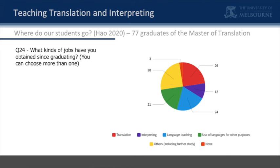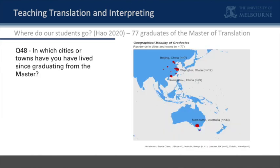What's important here is that we become aware that even though we think we are training for a particular market — the translation market — and therefore go and speak to translation employers as if they knew, the reality is that we are training for a very wide range of professions, including teaching. So this separation of translation from teaching doesn't make much sense in sociological terms. Also, even though we're in Melbourne and endorsed by NAATI, we don't really train just for the local market. When we ask in which cities have you lived since graduating, quite a few are in Melbourne, but we also have graduates in Beijing, Shanghai, Guangzhou, and other places in China.